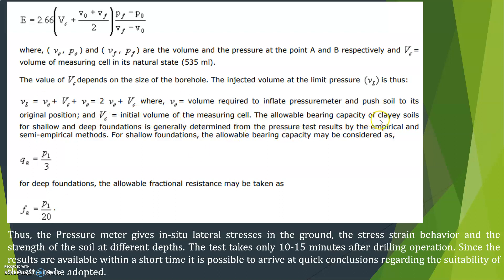The allowable bearing capacity of clay soil for shallow and deep foundations is generally determined from the pressure test results by the empirical and semi-empirical methods. For shallow foundations, the allowable bearing capacity may be considered as Qa is equal to P1 divided by 3. For deep foundations, the allowable fractional resistance may be taken as Fa is equal to P1 divided by 20.